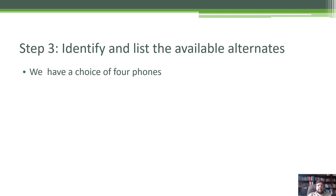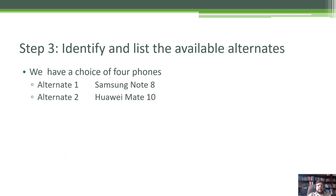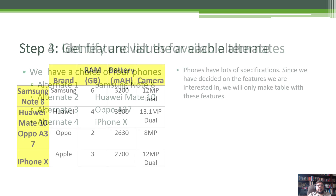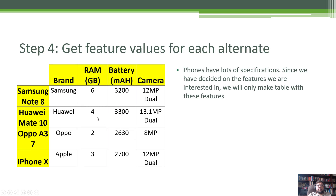Now we have the preference vector. The next step is to pick the alternates available to us. In this case we have Note 8, Huawei Mate 10, Oppo A37, and iPhone 10x — four alternates. Next, you create a table with the four alternates in the rows and list the features — brand, RAM, battery, and camera — in the columns.